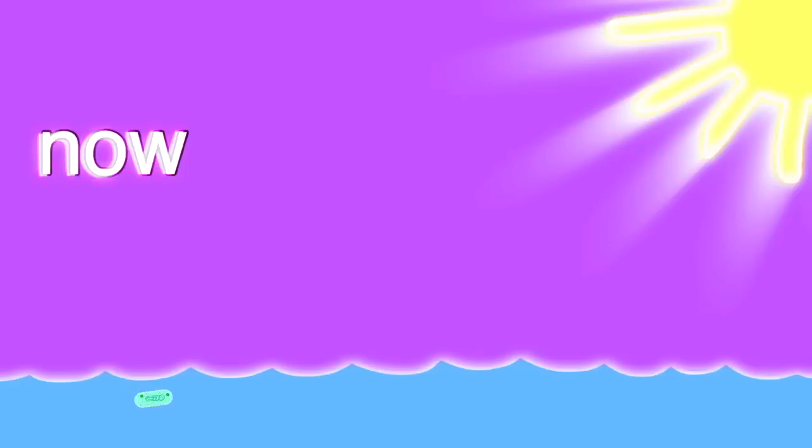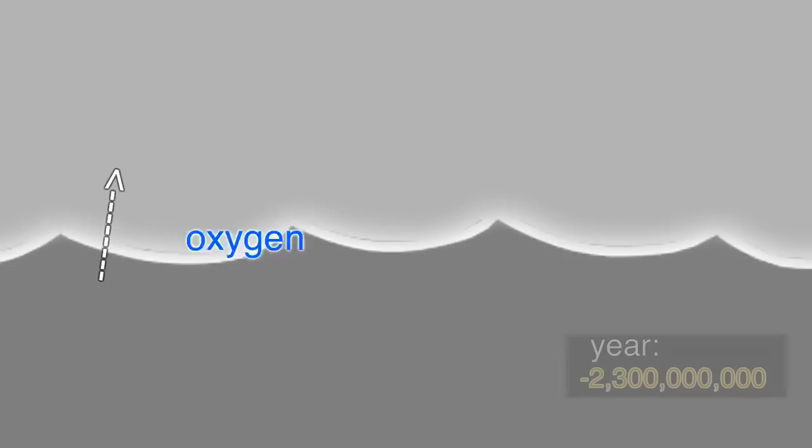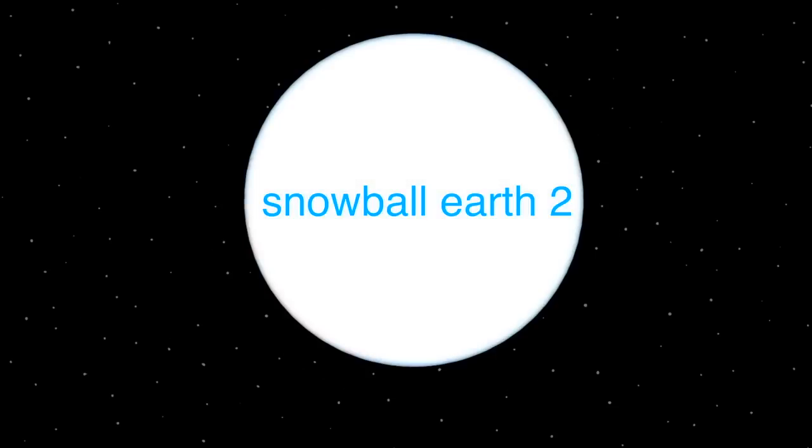Tired of living at the bottom of the ocean? Now you can eat sunlight using a revolutionary technique. You can convert sunlight into food. Taste the sun. Side effect: Now there's oxygen everywhere and the sky's blue. Then the earth might have been a snowball for a while, maybe even a couple of times.